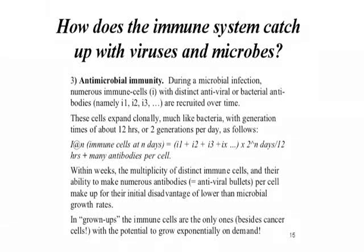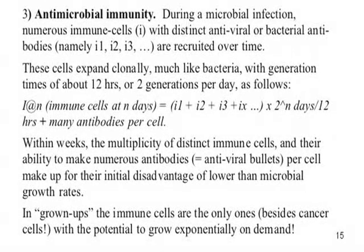How does the immune system catch up with viruses and microbes? During a microbial infection, numerous immune cells — I'll call them I to give you a simple equation — it's very clear-cut. You cannot mess around with the laws of the germ theory too much. They are natural constants that are not very flexible. They depend on the generation time of the cell, the ability to make DNA, RNA, and proteins, and the innate dependence of viruses. They constantly make distinct antiviral or antibacterial antibodies that are recruited over time, and the immune system recruits more and more. It then expands those soldiers that fit the enemy selectively, co-opting from one antigen-specific antibody to millions, doubling like bacteria in a sense.